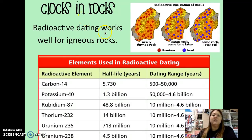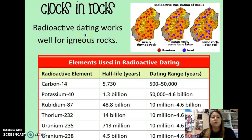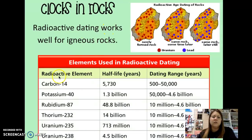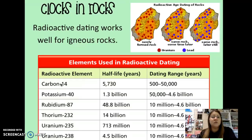Radioactive dating is going to be used for igneous rocks, because you know when those rocks form — they have a specific time they form when that lava or magma is emitted and then cools down into a hardened rock. Here are some examples of different types of radioactive elements. You may have heard of some of these from the periodic table. This shows the half-life in years for each particular radioactive element.